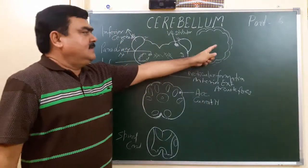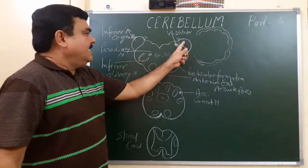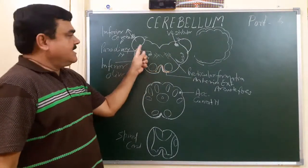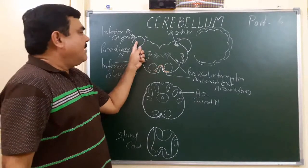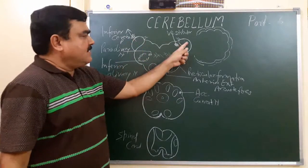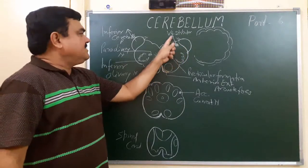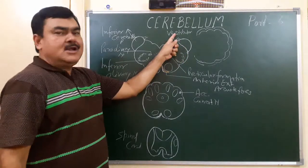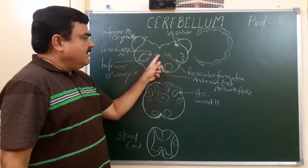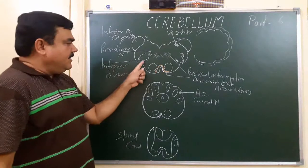In this diagram, this is the cerebellum, this is the cortex. Here is the inferior cerebellar peduncle. This is a section of the medulla oblongata. This part is the inferior cerebellar peduncle. The nucleus here is the vestibular nucleus. Here is the reticular formation, and here is the inferior olivary nucleus.